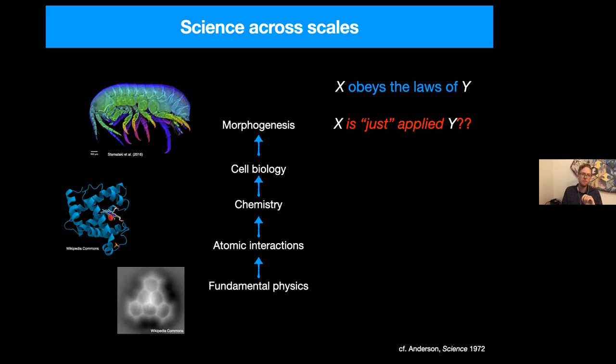However, we would be wrong to say that one level is merely an applied form of the field below. Because at each scale, there are new emergent phenomena that arise. And these allow for a different kind of description, a description which will often use different vocabulary and a different flavor of mathematical equations than the level below. In other words, you could say that as Phil Anderson put it, more is different, meaning more atoms gives rise to new and different phenomena, more cells give rise to new and different phenomena.